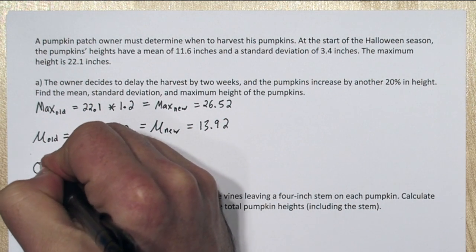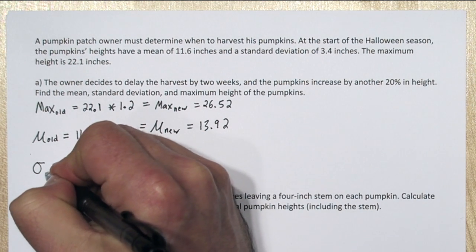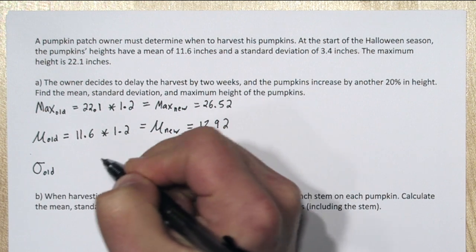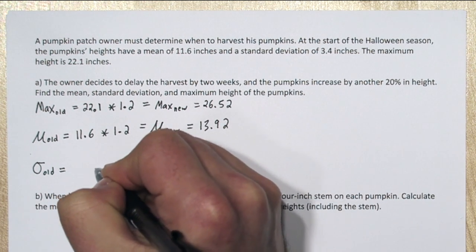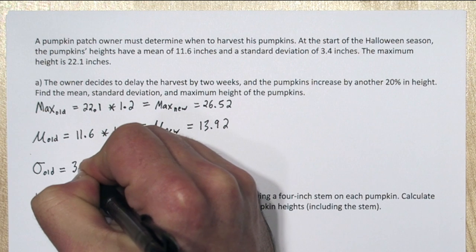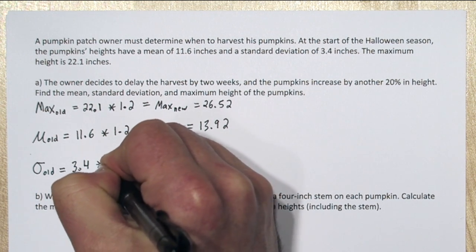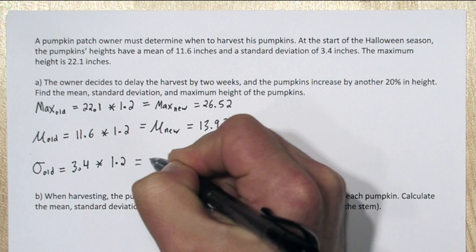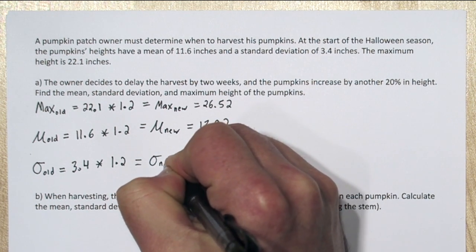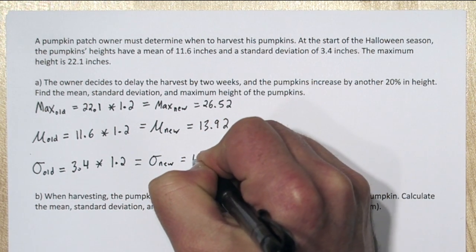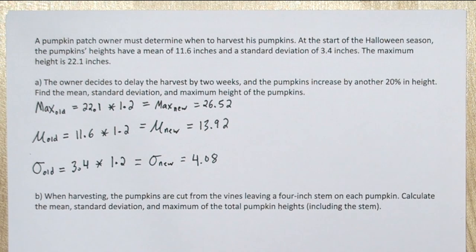Now standard deviation is a measure of spread, but when you multiply everything in the data set by a constant, it also gets multiplied by the constant. So our original standard deviation was 3.4. If we increase it by 20%, our new standard deviation is 4.08. When you multiply all the data by a constant,